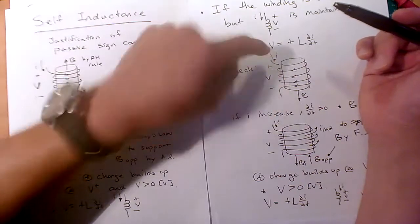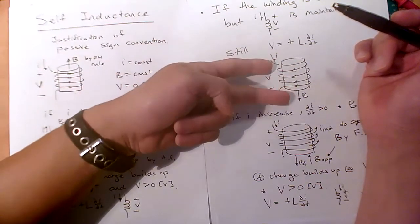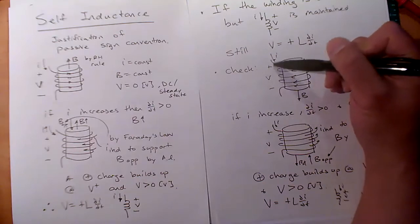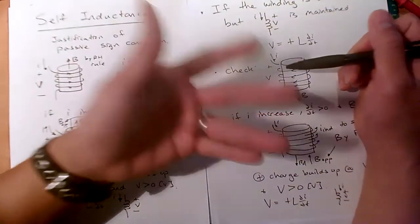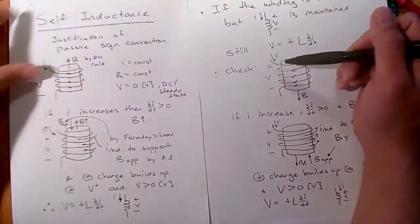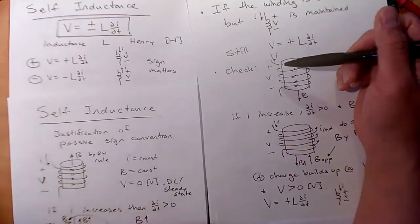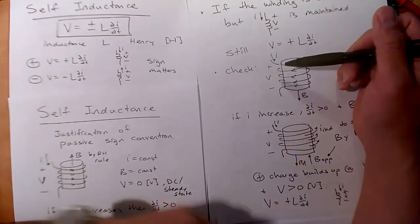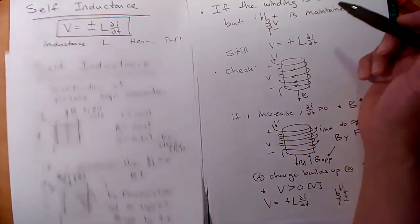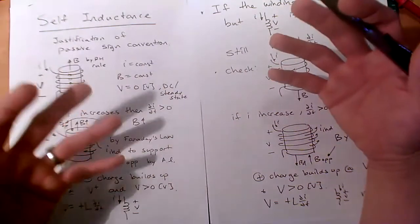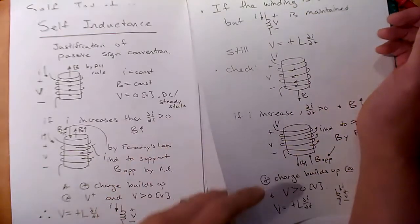If you were to flip the V polarity while keeping I going down, you're still getting positive charge buildup on the same side, but reading it off the multimeter gives a negative number. That would support the negative version of self-inductance — it's like flipping the current or flipping the voltage, just one of them. So hopefully this analysis justifies where the passive sign convention comes from for the inductor.